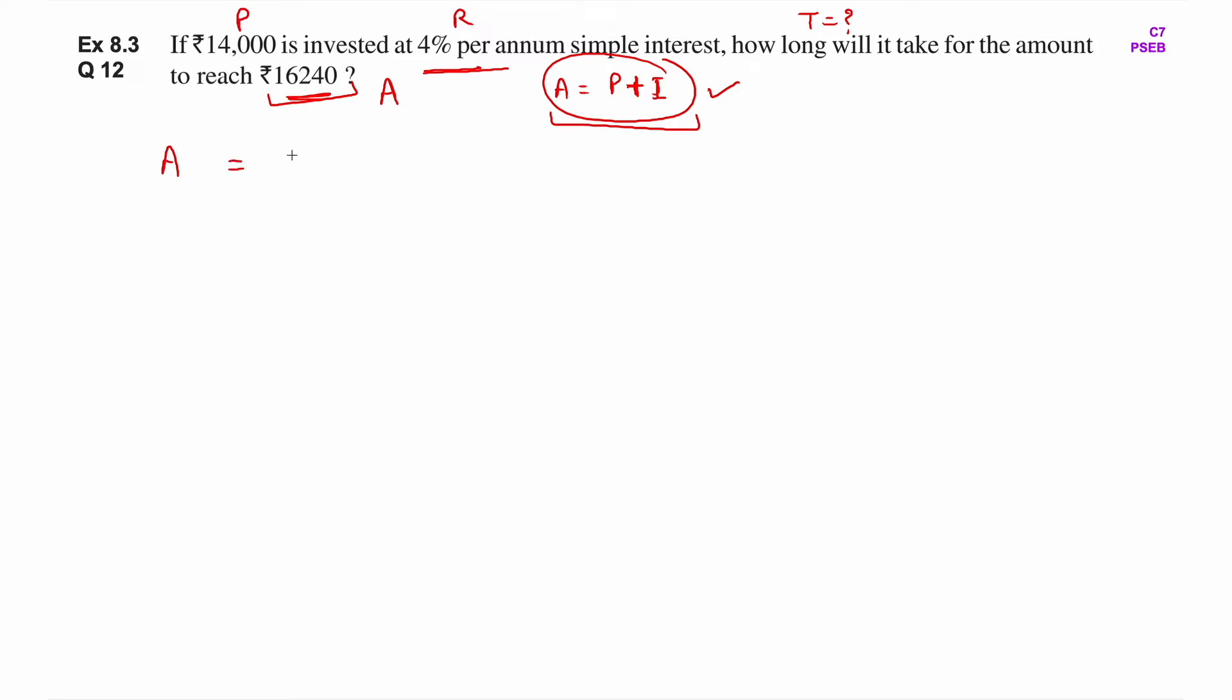Here the A value is rupees 16,240. Principal amount is rupees 14,000, which was invested initially. And at the end, with interest, what amount is expected? 16,240. So A equals P plus I.